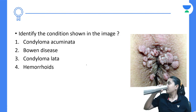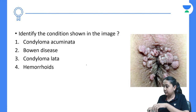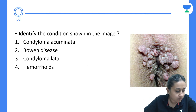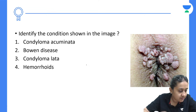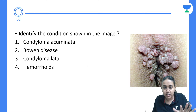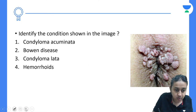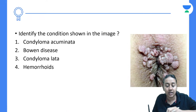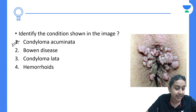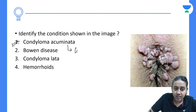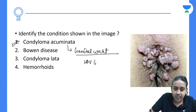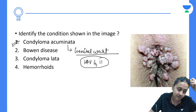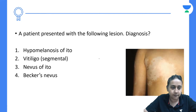Next question: identify the condition shown in the image. You can see a verrucous growth on the perianal skin — these are very classical lesions of condyloma acuminata, another name for genital warts. The HPV strains causing genital warts are 6 and 11.